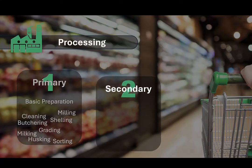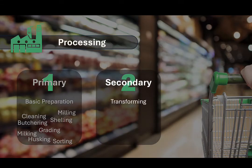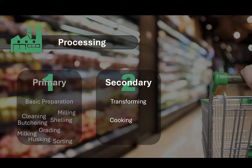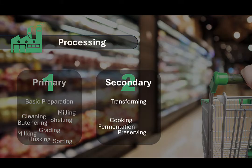Secondary food processing involves transforming primarily pre-processed foods into more complex food products. This stage typically involves combining ingredients and applying various techniques, including mixing different ingredients to create new food products, cooking by baking, boiling, frying, or roasting, fermentation — the process of using microorganisms to transform foods like producing yogurt, cheese, and beer — or preserving using methods like canning, freezing, or drying to extend the shelf life of food.